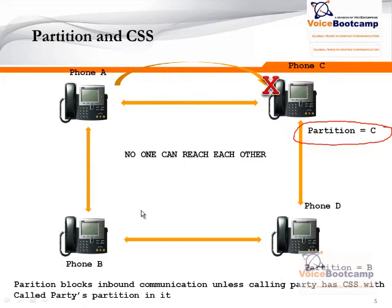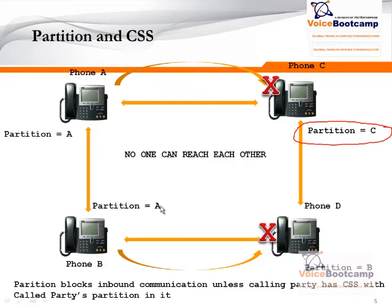Phone B, or D, belongs to partition B. So therefore, nobody can dial phone D either. Phone A and phone B belong to the same partition, partition A. But because both phones belong to the same partition does not mean they can still dial each other. You still need the calling search space to dial. Because of the partition, phone A does not have a calling search space with partition A. Therefore, phone A cannot dial phone B.